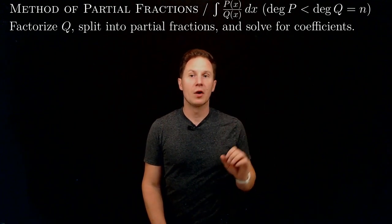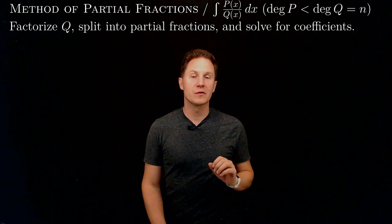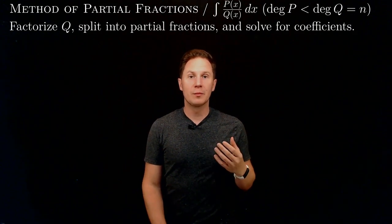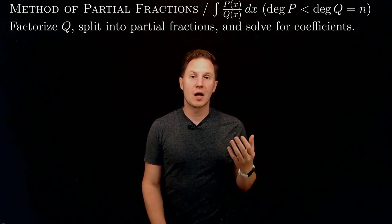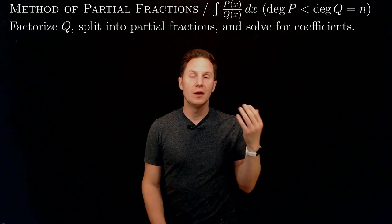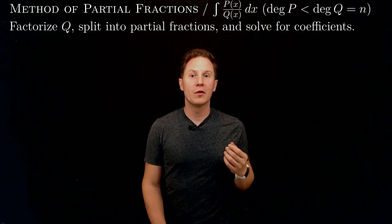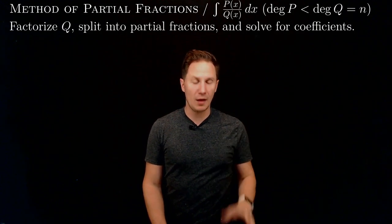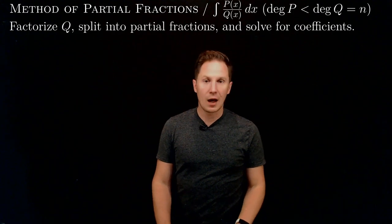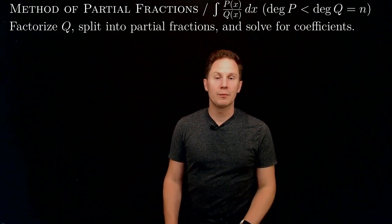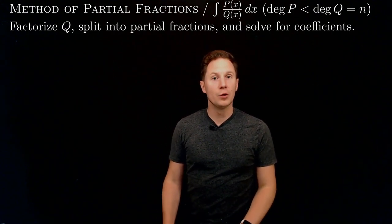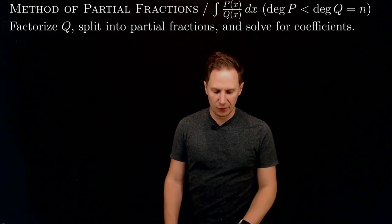Once we have this partial fractions decomposition, we can integrate p over q as the sum of the integrals of these simpler partial fractions that we can evaluate. There are different cases to consider depending on how q factorizes.